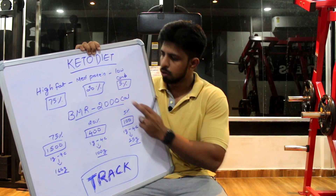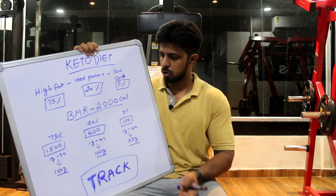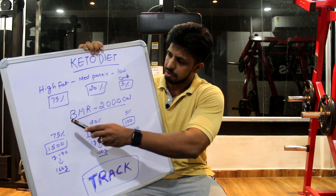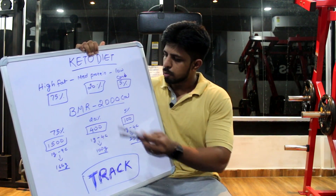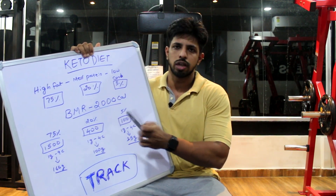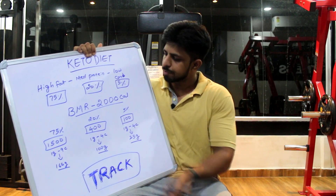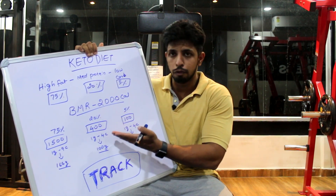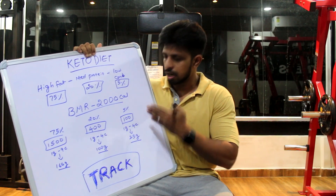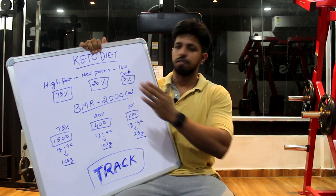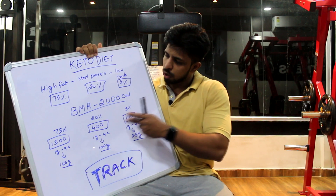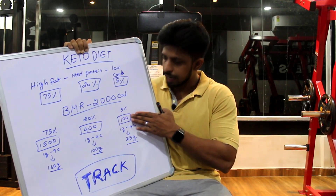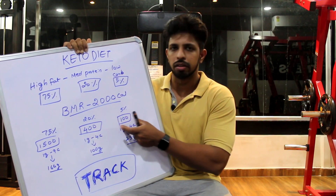First, we calculate BMR. Once we have BMR, we will get the number in calories. So with 75%, 20%, 5% — if we have 2000 calories, 75% is 1500 calories, 20% is 400 calories, and 5% is 100 calories. If you have your BMR first, we will get the calorie numbers and percentages.